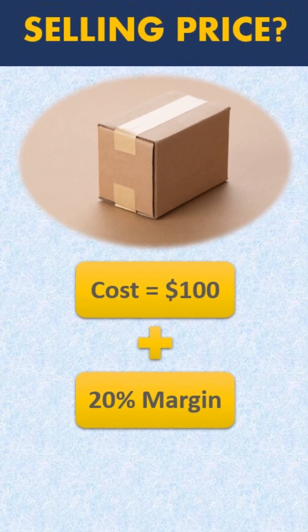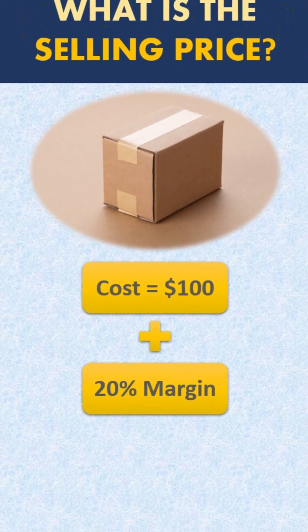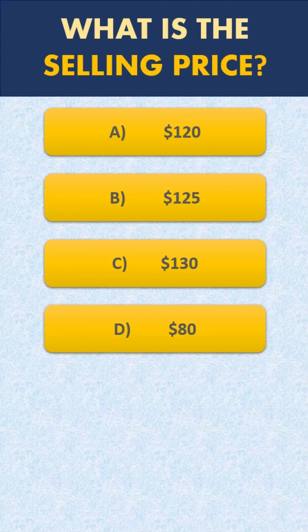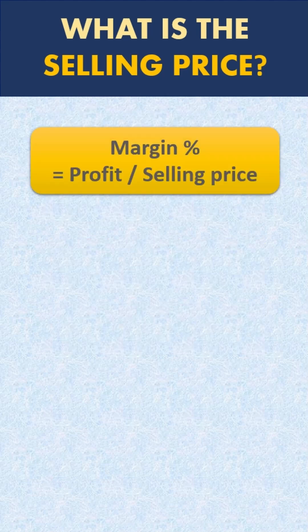The question I asked was: what is the selling price if cost is $100 and margin is 20%? If you answered A, $120, you are wrong. In fact, the correct answer is $125.